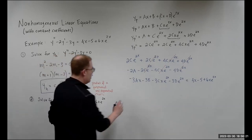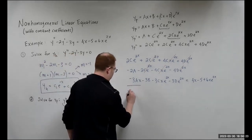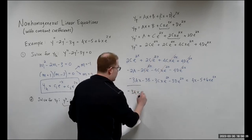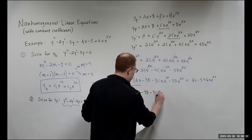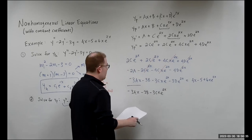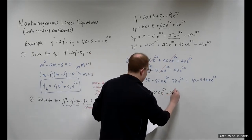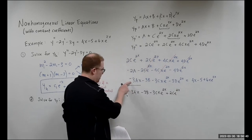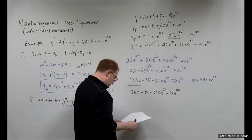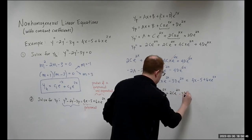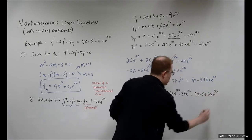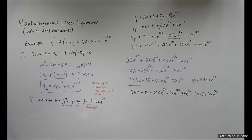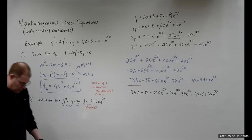After combining and cancelling, we're left with: -3Ax + (-3B - 2A) + (-3Cx)e^(2x) + (2C - 3D)e^(2x). That helps quite a bit. The same strategy as before: pair up functions of the same type and line them up with the right-hand side.